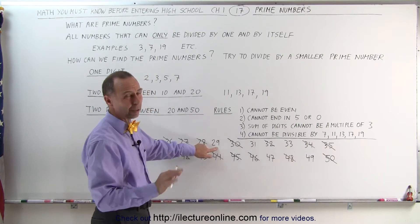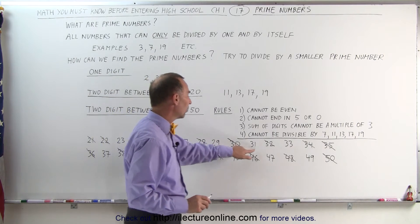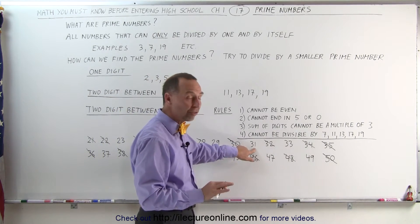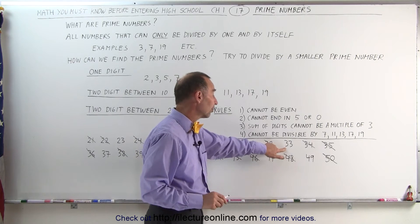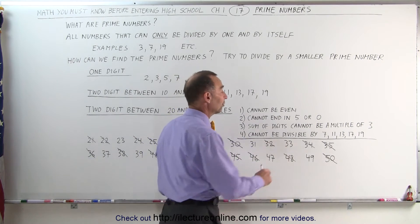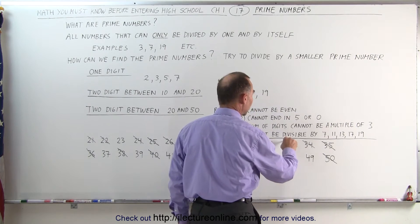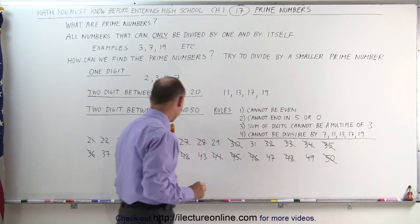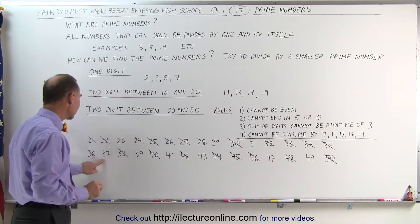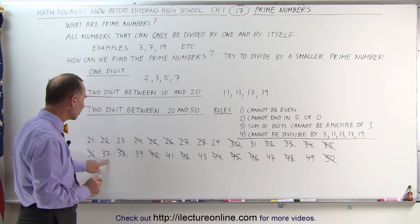2 plus 9 is 11, it's not a multiple of 3. 3 plus 1 is 4, that's not a multiple of 3. 33, well we know that that's divisible by 11, or it's a multiple of 3 when we add the digits together, so that's not a prime number. 37, 3 plus 7 is 10, it's not a multiple of 3.